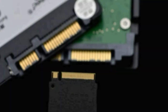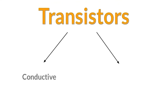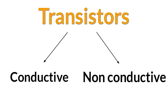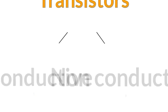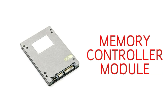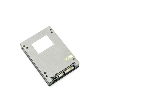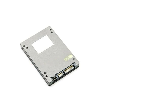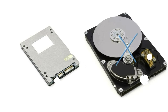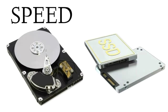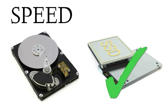Now let's see how SSDs work. SSDs are smaller in size compared to a hard disk and they have millions of transistors in them. Not every transistor is the same — some transistors can conduct electricity while others cannot. The conductive transistor represents 1 while the non-conducting transistor represents 0. The memory controller module in the SSD reads the binary information and sends it to the computer.